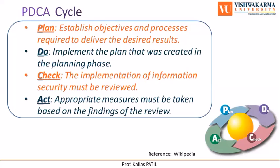In the Act phase, appropriate measures must be taken based on the findings of the review. This Act phase is where a process is improved. Records from the Do and Check phases help to identify issues with the process. These issues may include problems, opportunities for improvement, insufficiencies, and other issues that result in outcomes that are less than optimal. Root causes of such issues are investigated and eliminated by modifying the process.